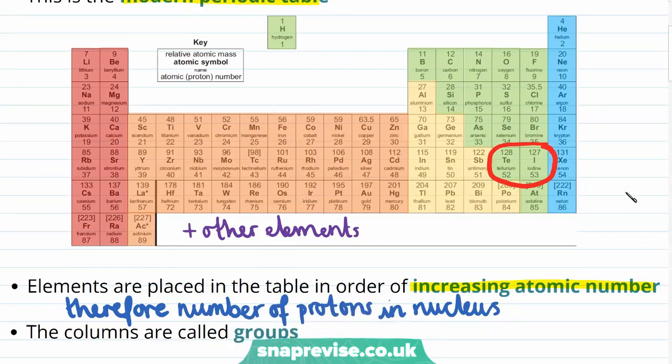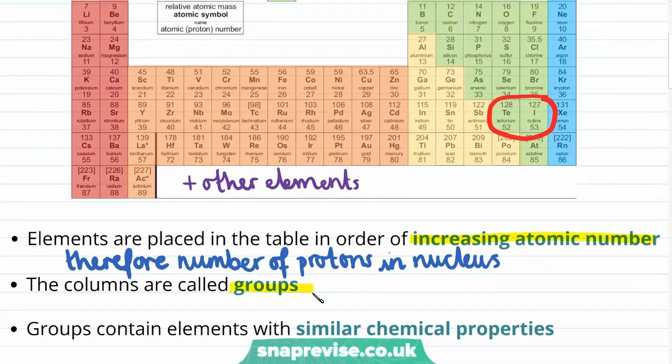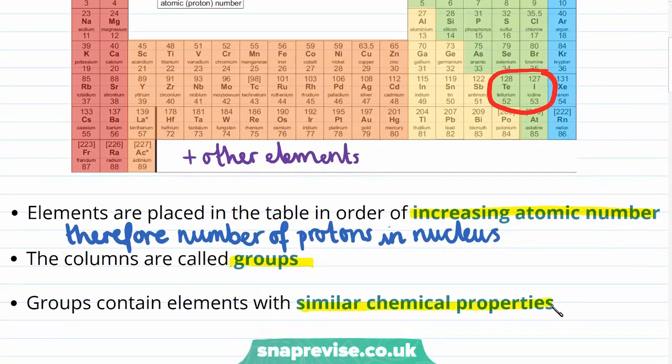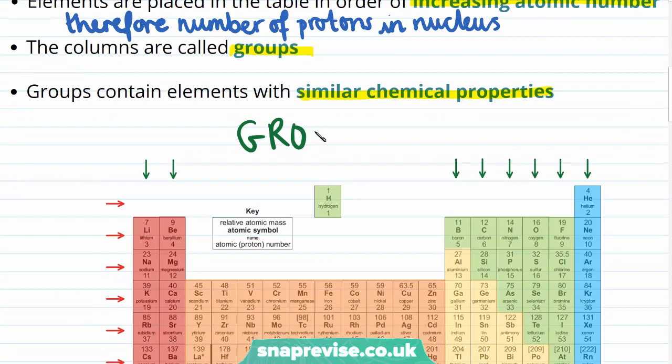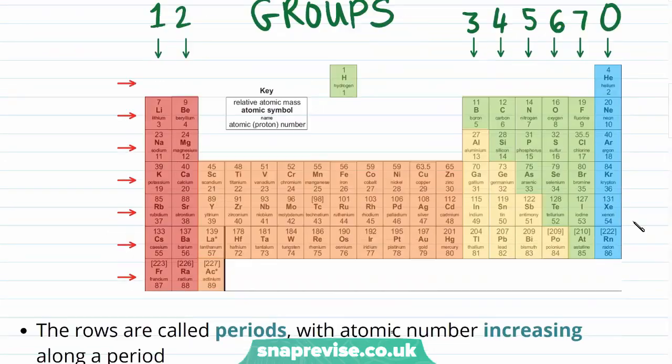The columns of the periodic table are called groups, and groups contain elements with similar chemical properties. The groups are numbered moving from the left-hand side to the right-hand side, with the group on the very right-hand side of the periodic table being known as group 0. You can find out more about why it's called group 0 in our video on electronic configuration.